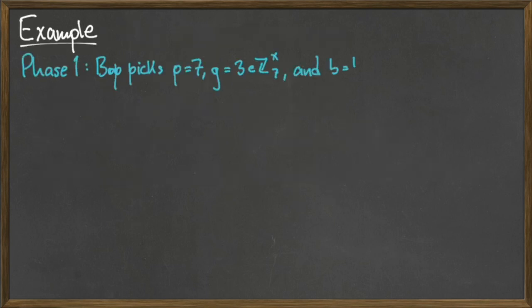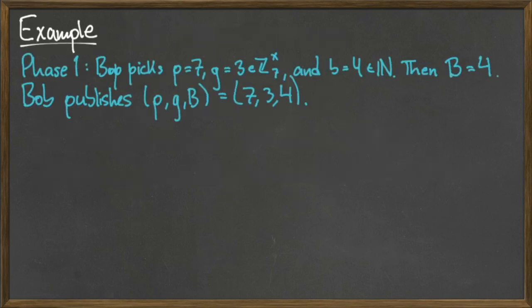To illustrate the ElGamal encryption system in action, consider the following example. Suppose that Bob chooses the prime p = 7, the generator g = 3, and a secret natural number b = 4. Bob then computes capital B, which is equal to 3 to the fourth power mod 7, which is equal to 4. Bob then publishes his prime p, generator g, and capital B, but as always, he keeps his little b = 4 a secret.